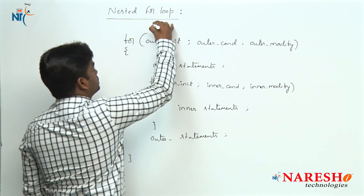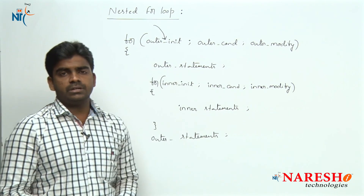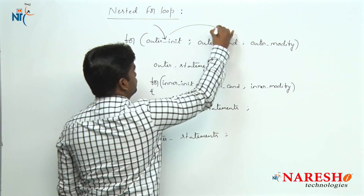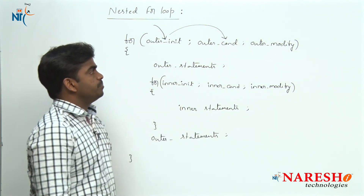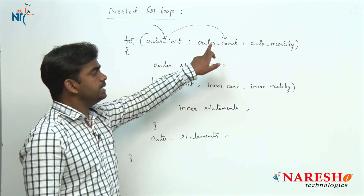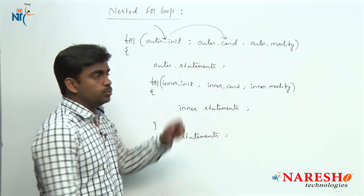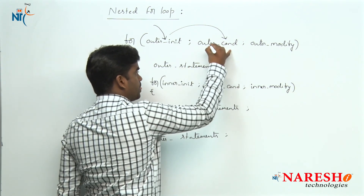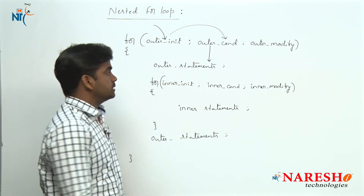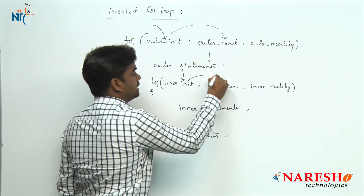And how the flow will execute is also important. First of all, the control comes and executes the outer initialization statement. After initialization, it will check the condition of the outer loop. If the condition has failed, directly it will terminate the flow. If outer condition is true, the control moves inside and executes outer statements first, after that inner initialization, and next it checks the inner condition.